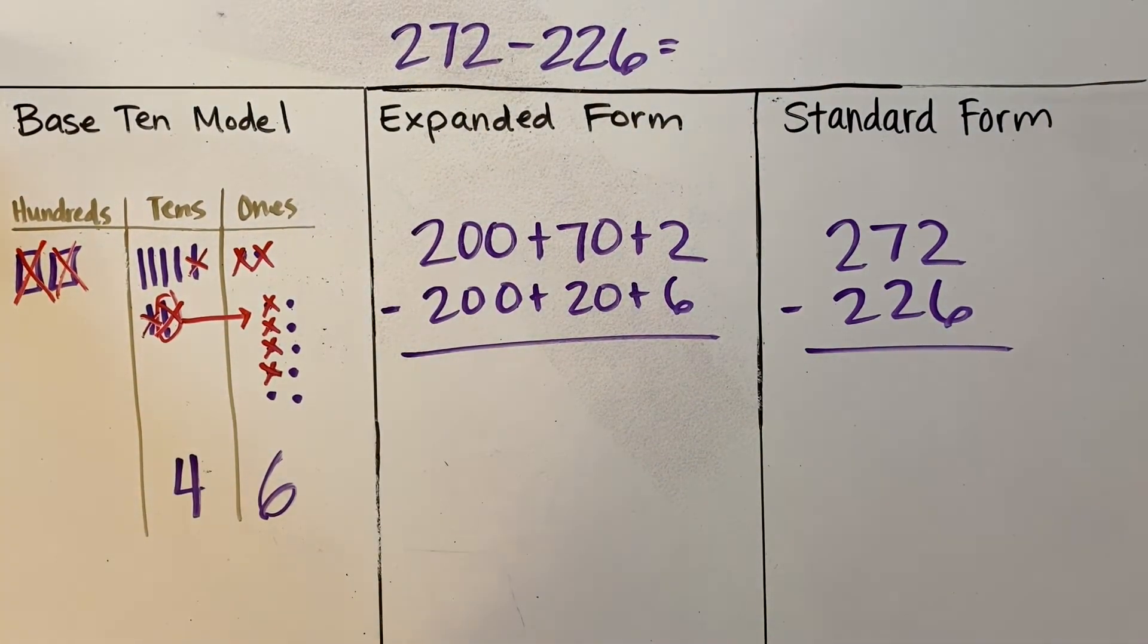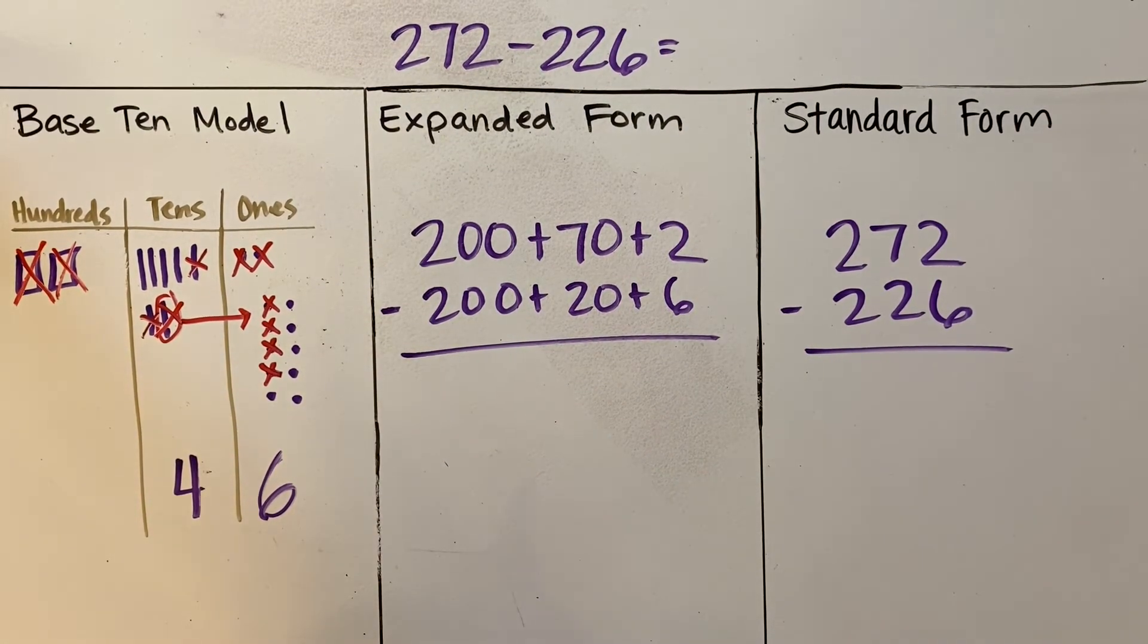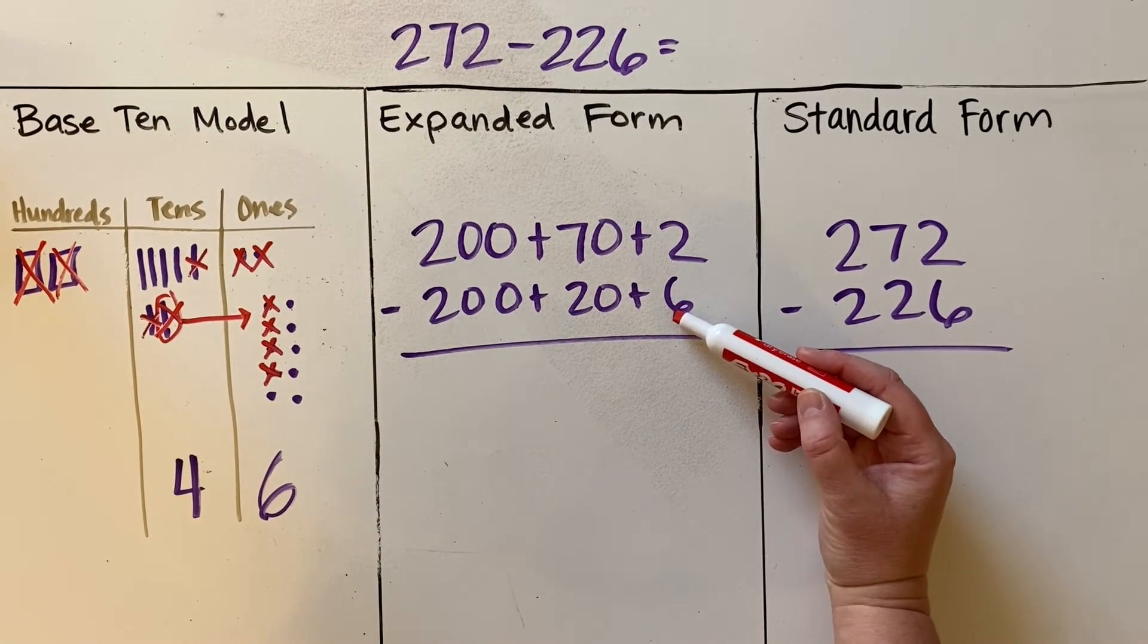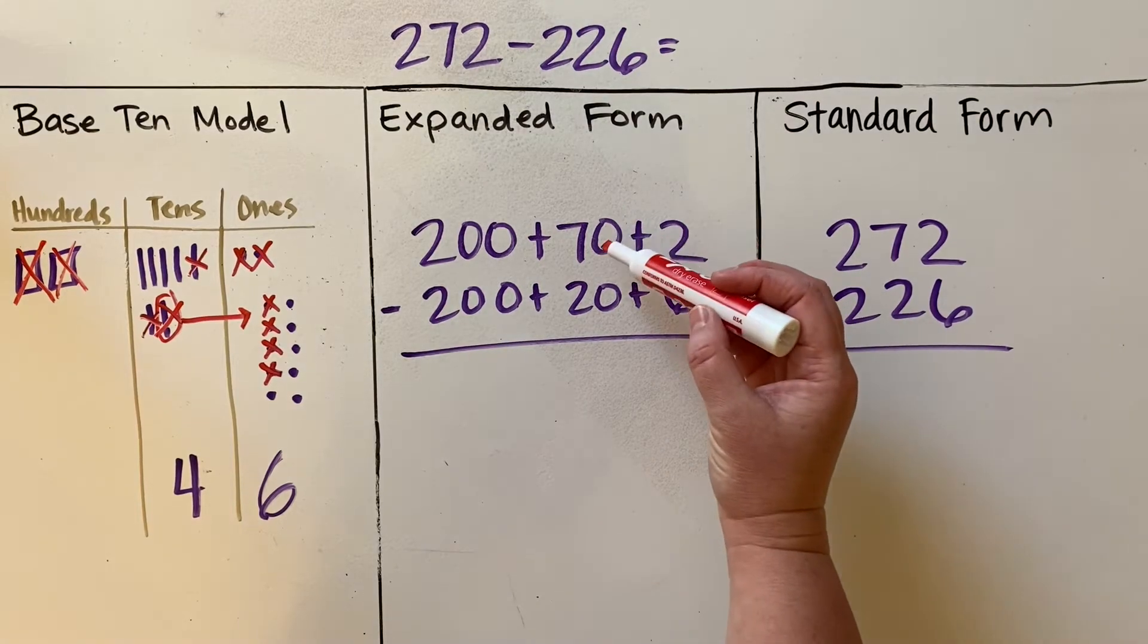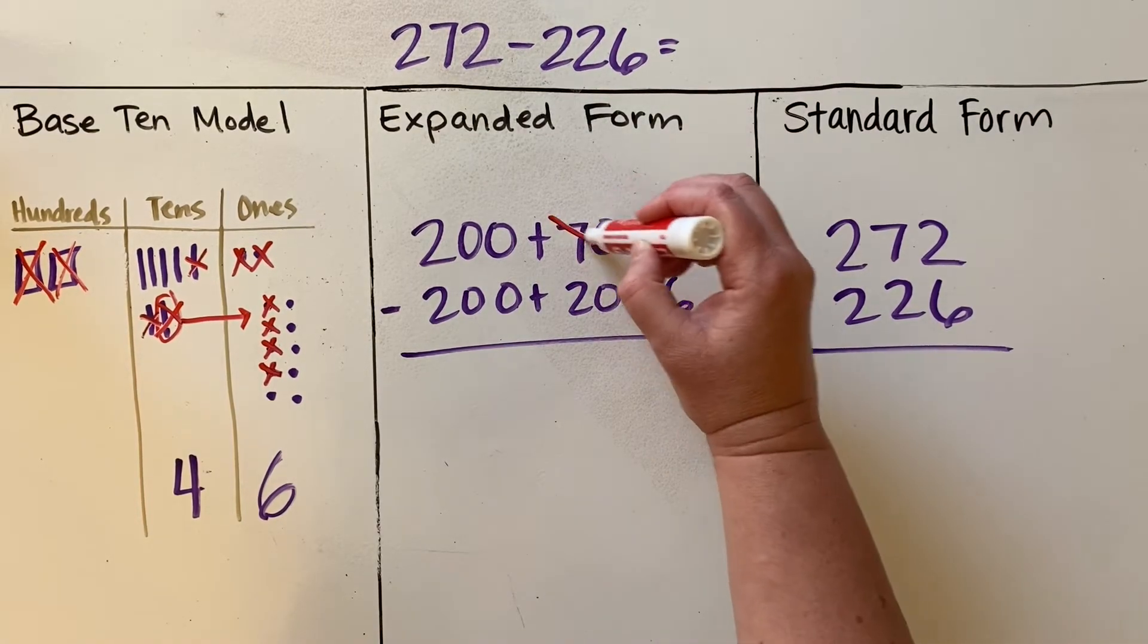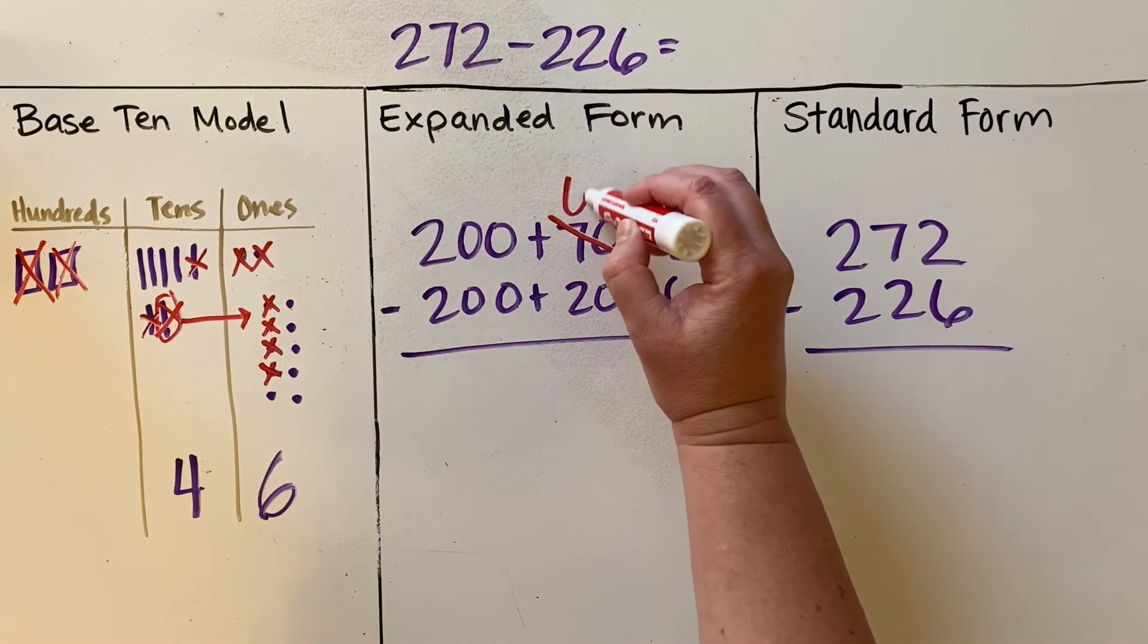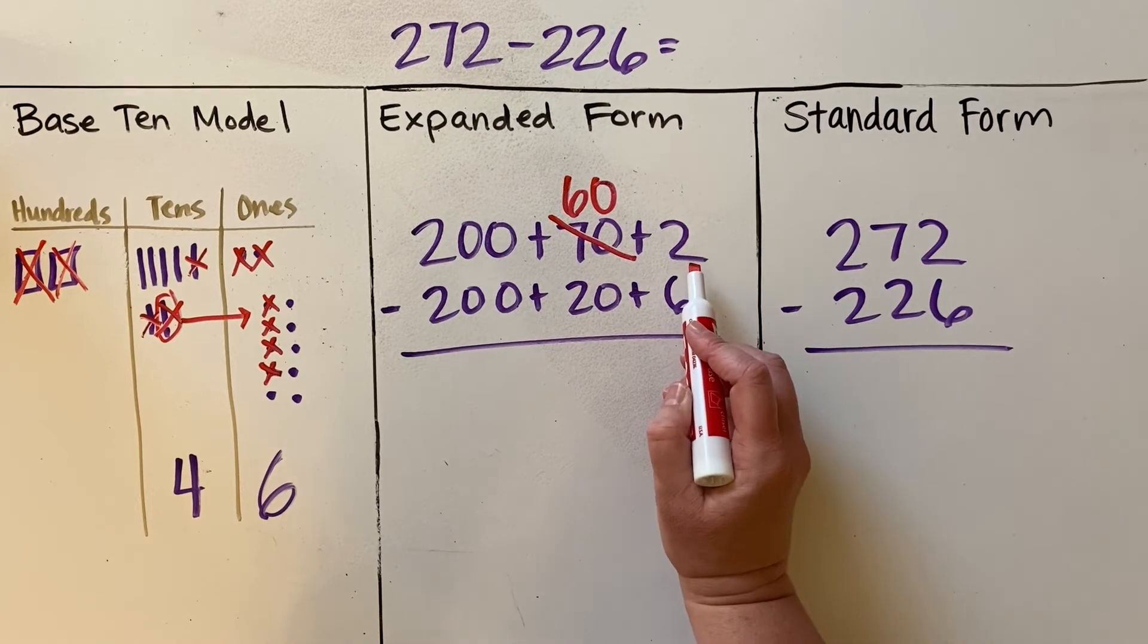Now if I show the same thing with expanded form, I look and see, oh, I'm doing 2 minus 6, and there's not enough. I can't do 2 minus 6, so I need to regroup again. I'm looking over in the tens place, and I'm going to take a 10 away, so it will no longer be 70 but 60. That 10 is going to be regrouped into the ones place, so rather than 2 ones, we're going to have 12 ones.